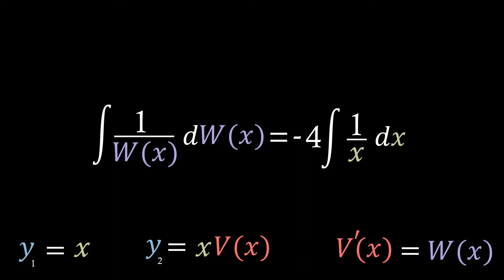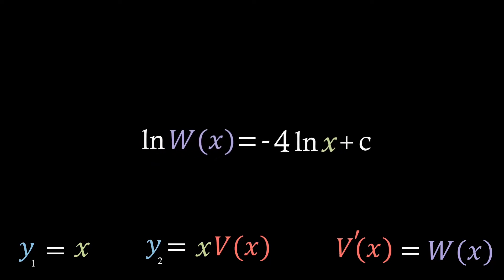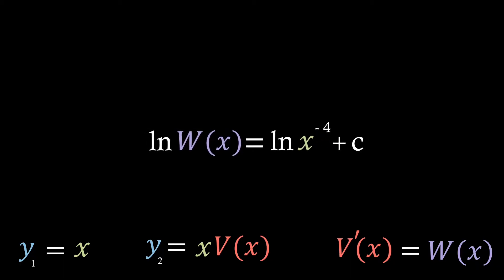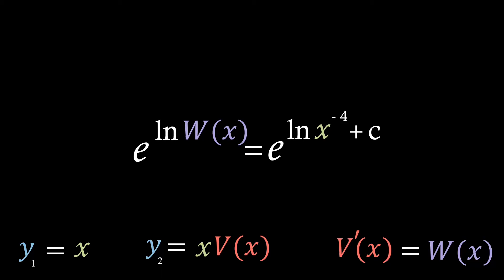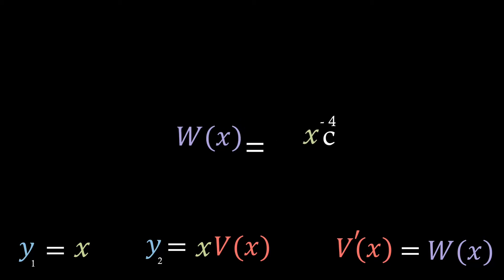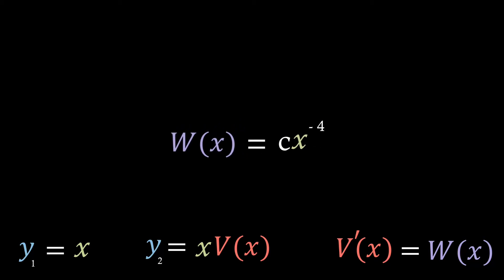Then if we integrate both sides by their respective elements, we come to this expression where ln is just the natural logarithm. Therefore, if we move the minus 4 to become the power of x and then take the exponential of both sides, we can cancel out the ln's, giving us that w equals a constant times x to the minus 4.